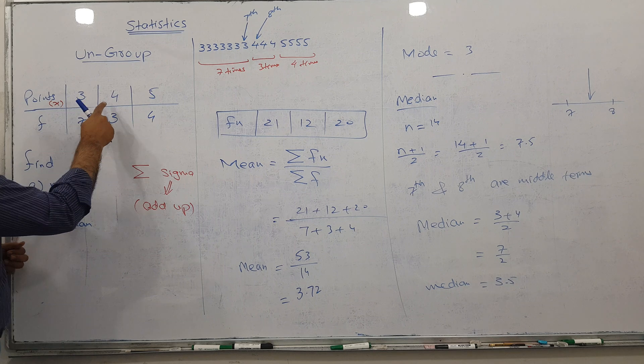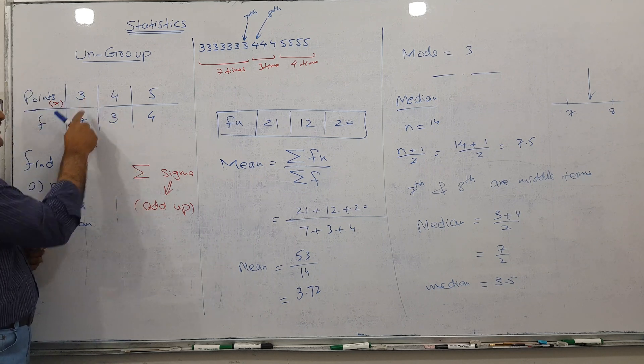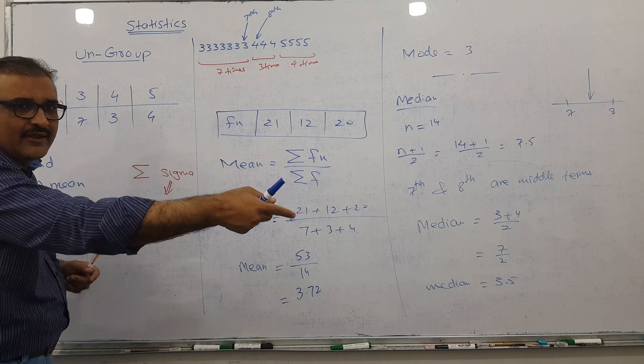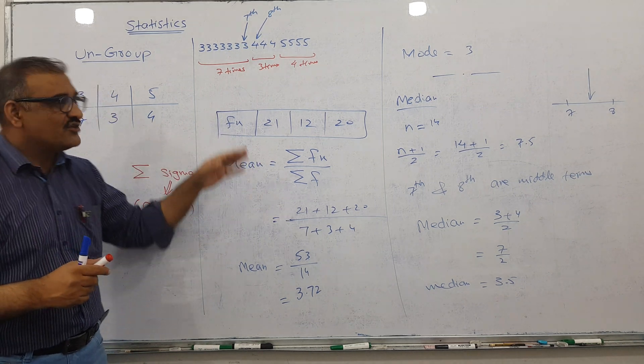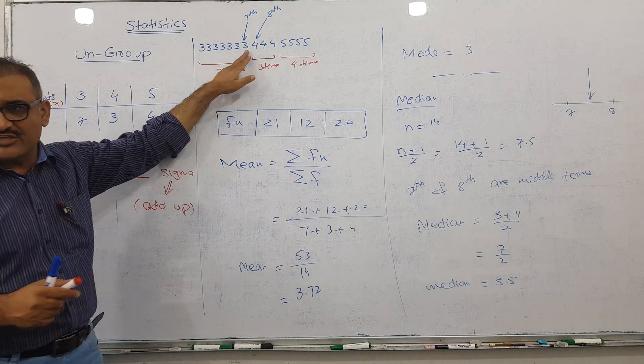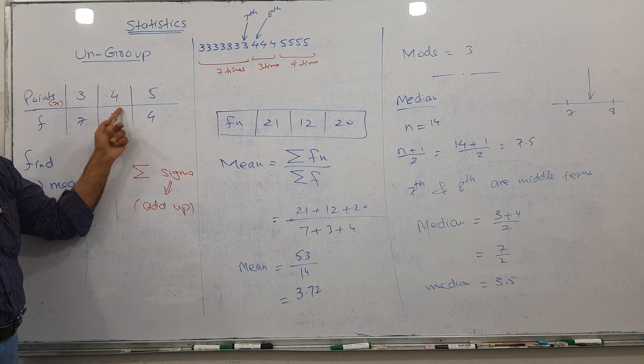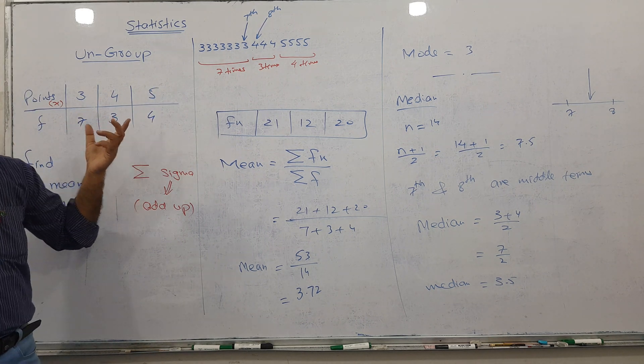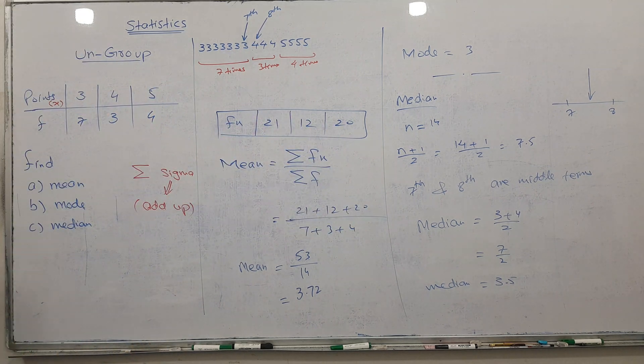The 7th term is the last 3, and the 8th term is the first 4. So the median is 3.5. Alhamdulillah, we got the answer.